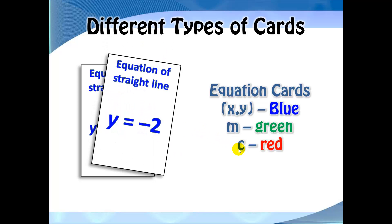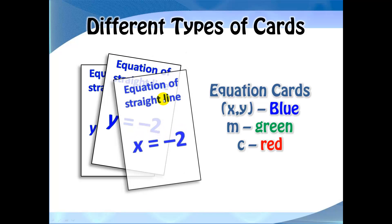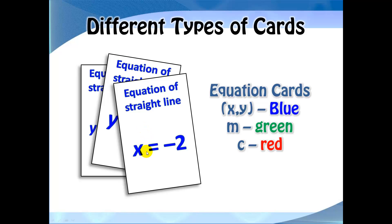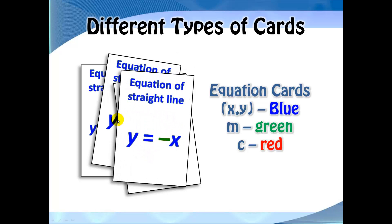Here is another equation of a straight line. Is this a horizontal line or a vertical line? Yes, it is a horizontal line. Next we have a vertical line. This is the equation of a straight line that cuts through the origin, and it has a negative gradient.